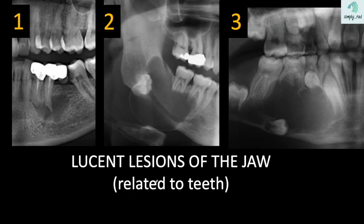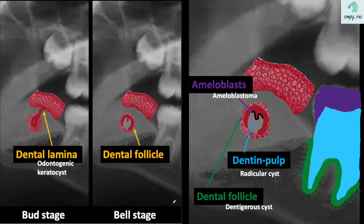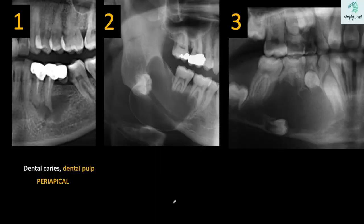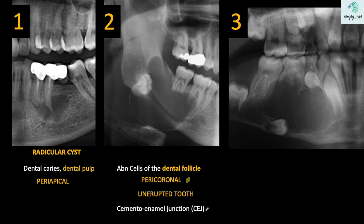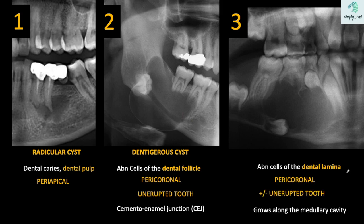Today we saw three differentials of lucent lesions of the jaw. A knowledge of tooth development can help us understand the appearance and name of the lesions. A lucent lesion in the root or apex of the tooth is likely due to necrosis in the pulp — because radicula means root, this is called a radicular cyst. A lucent lesion in the pericoronal region with cyst convergence at the cementoenamel junction of an unerupted tooth is more likely due to failure of dental follicle cells — this is called a follicular cyst, or dentigerous cyst. Lastly, an abnormality in the early development of the tooth related to the dental lamina will more likely grow along the medullary cavity, and if associated with an unerupted tooth, will also be in the pericoronal plane — this is the odontogenic keratocyst. That's all for now, thanks for watching.